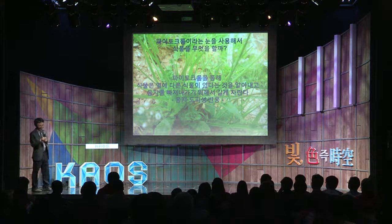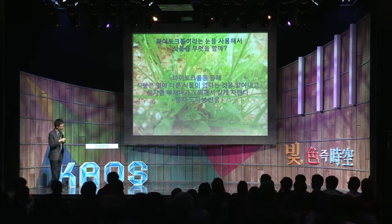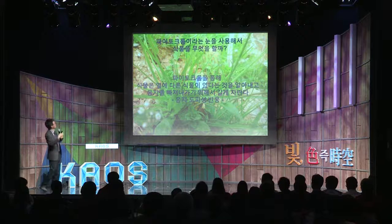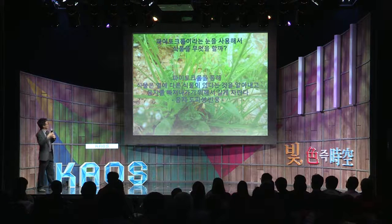결론으로, 파이토크롬이라는 눈을 사용해서 식물은 무엇을 할까요? 식물은 파이토크롬을 통해서 옆에 다른 식물이 있나 없나를 알아내고, 만약에 다른 식물이 있다 그러면 재빨리 그늘에서 벗어나기 위해서 길게 자랍니다. 집에서 식물을 키울 때 빛이 약하면 식물들이 굉장히 길게 자라죠. 식물은 빛이 부족하면 길게 자라다 보면 빛이 많은 곳에 도달할 수 있을 것이다 라는 방향으로 자랍니다. 제가 여러분에게 말씀드린 건, 식물도 사람처럼 광수용체를 가지고 있고 그걸 통해서 빛을 보고 주변에 다른 식물이 있나 없나를 살필 수 있다는 이야기입니다.